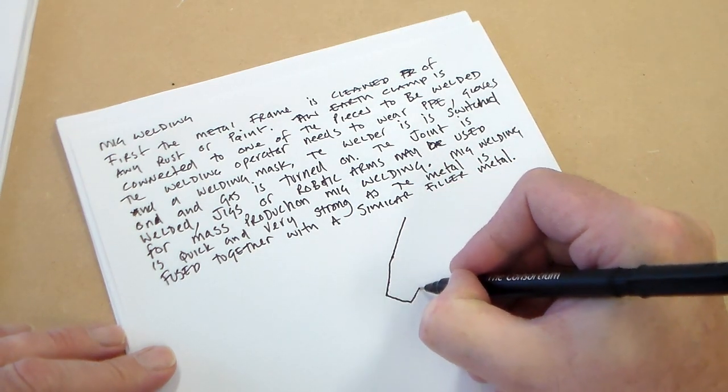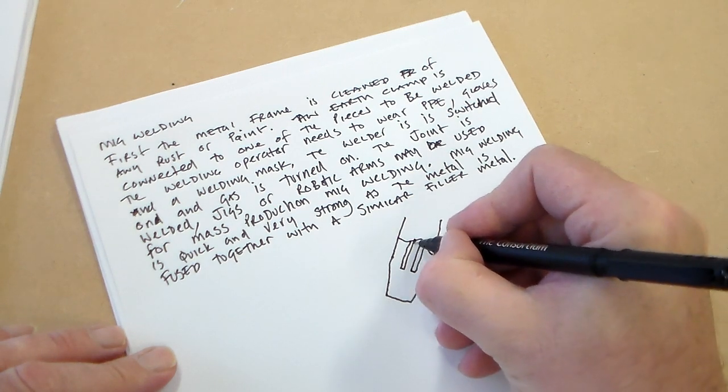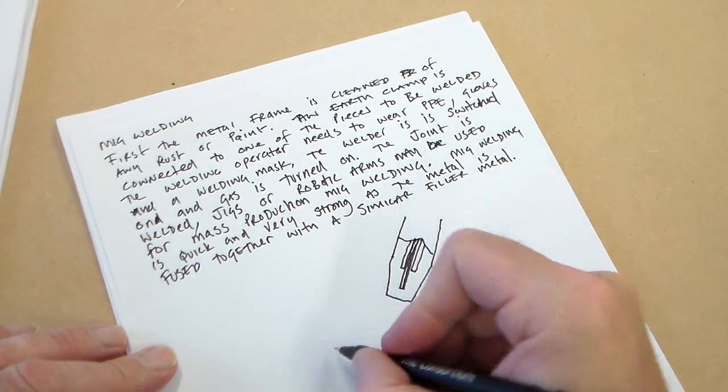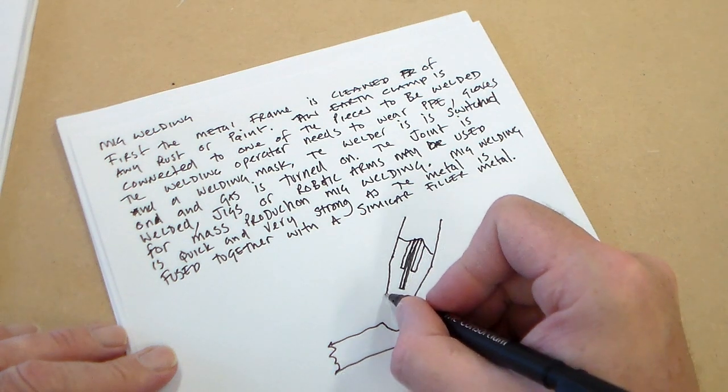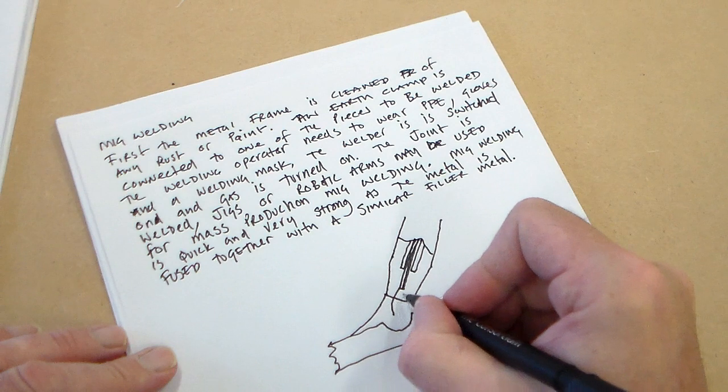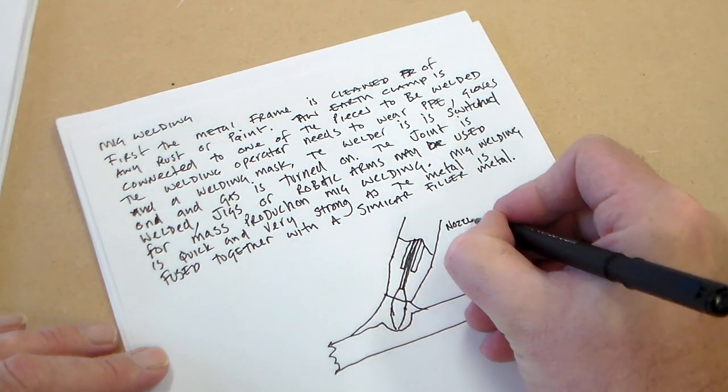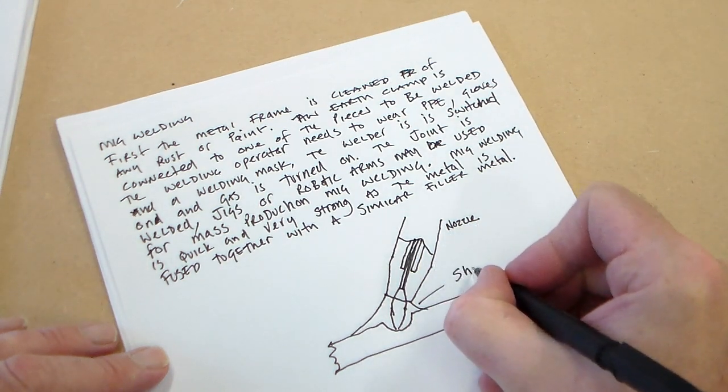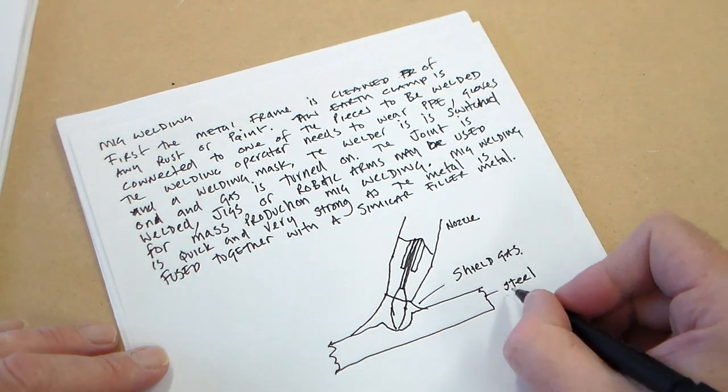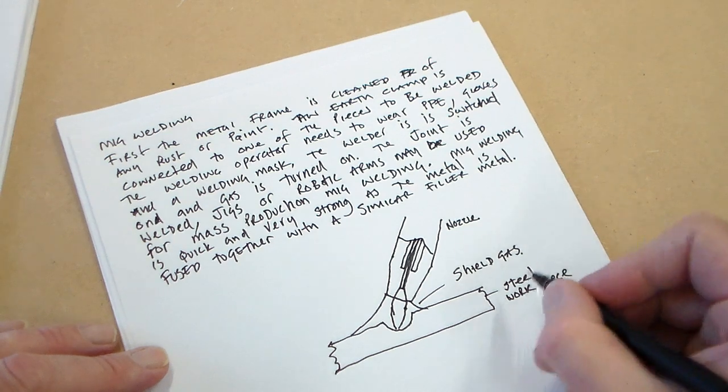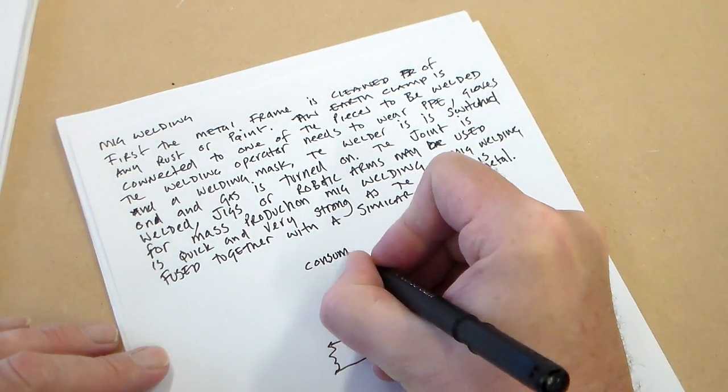We can maybe draw a sectional view of a nozzle here showing the rod coming down here. If we've got a piece of steel here with our weld, we would have a gas shield here and an arc would be coming here. So we can label this with nozzle, shield gas, steel workpiece, and what we have here is what is called a consumable electrode.